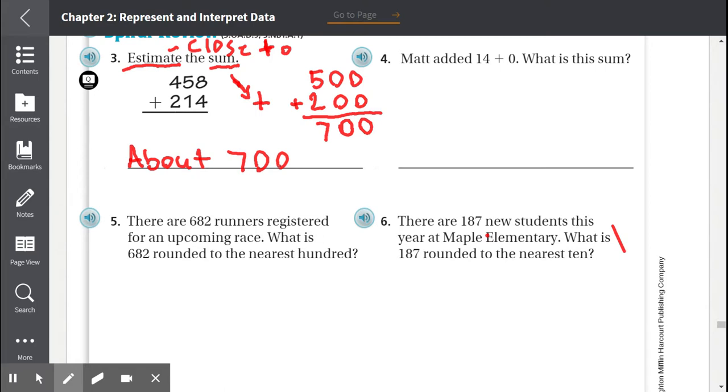Number 4, Matt added 14 plus 0. What is the sum? 14 plus 0 is 14. And because of the identity property, we know whenever we add a number to 0, our sum will be that number. So 14. And we know the sum means to add. So whenever we say the word sum, we know we're going to be adding. Sum is the answer to an addition problem. So the sum is 14.